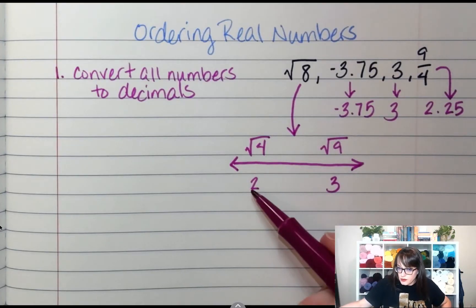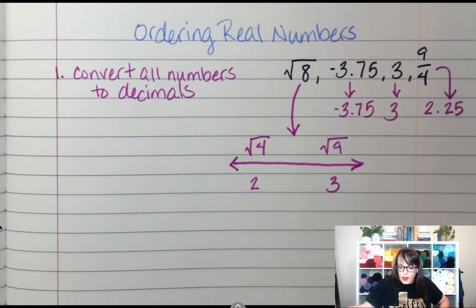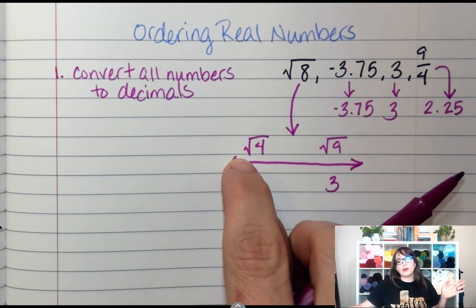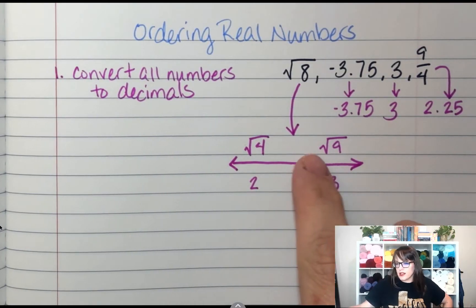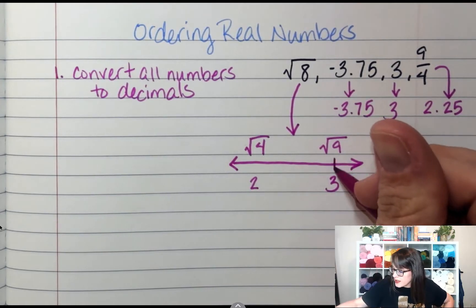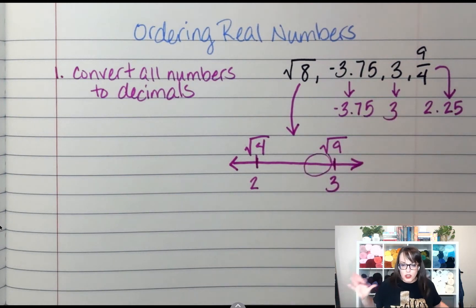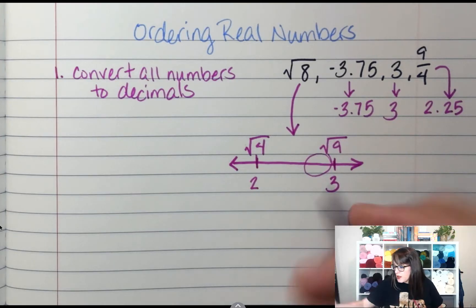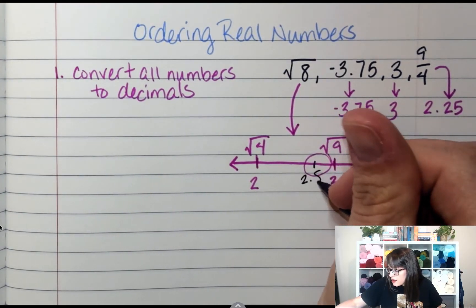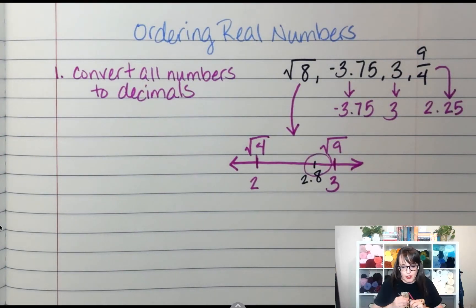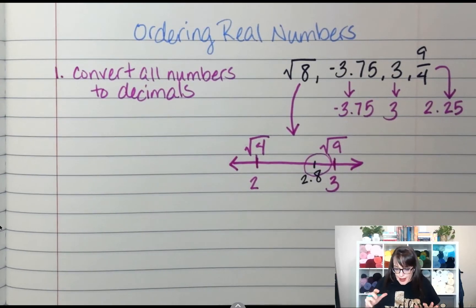So if I am on a number line and I have 2 and 3, where is the square root of 8 going to fall? Closer to the square root of 4 or closer to the square root of 9? It's going to fall closer over here somewhere. So if this is here, this is here, that's going to be somewhere in here-ish. So what is a decimal value in that location? We're going to go with 2.8 for this one. It's not exact—remember, it's irrational.